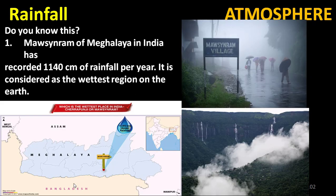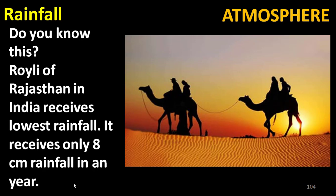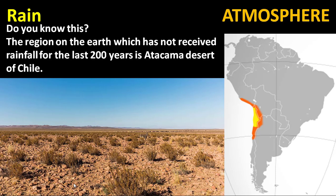Mawsynram in Meghalaya, India, has recorded 1,140 cm of rainfall per year and is considered the wettest region on earth. Agumbe in Karnataka is called the Mawsynram of South India due to its heavy rainfall. Royli in Rajasthan receives the lowest rainfall in India — only 8 cm per year. Nayakanahatti in Chitradurga is the driest place in Karnataka. The Atacama Desert in Chile has not received rainfall for the last 200 years.